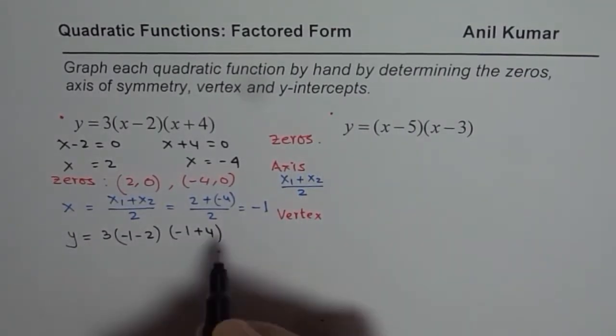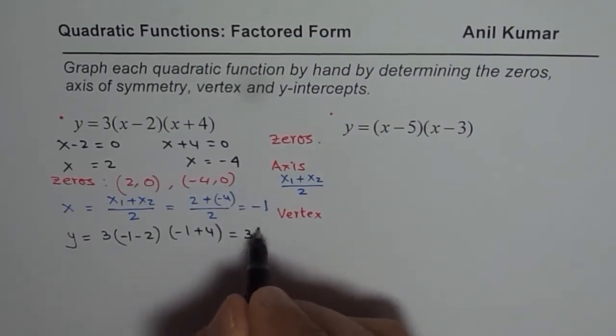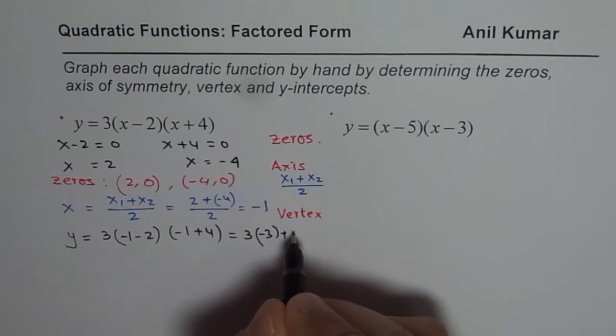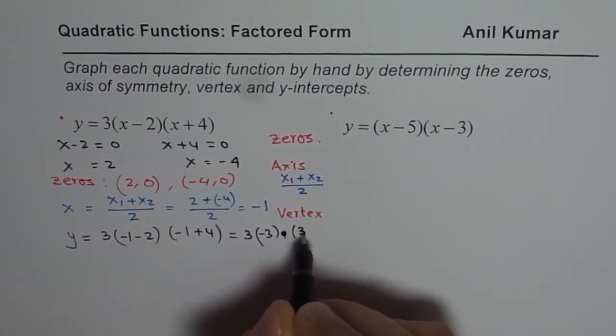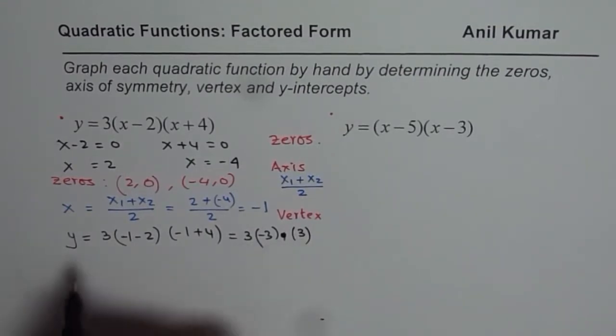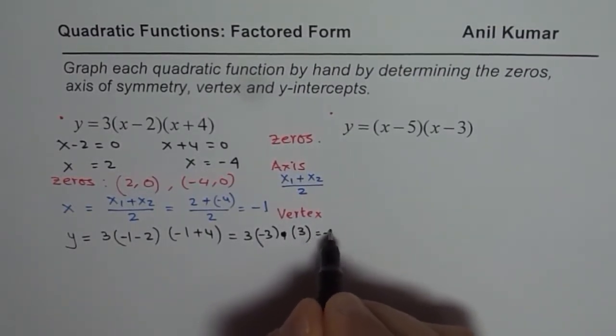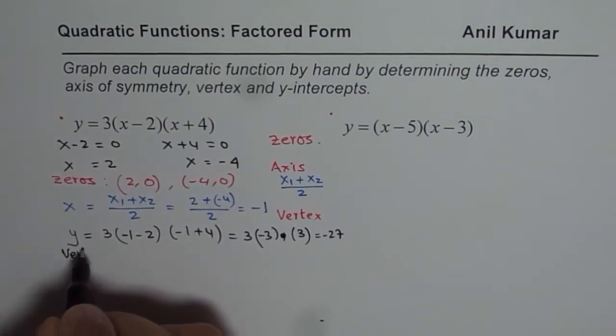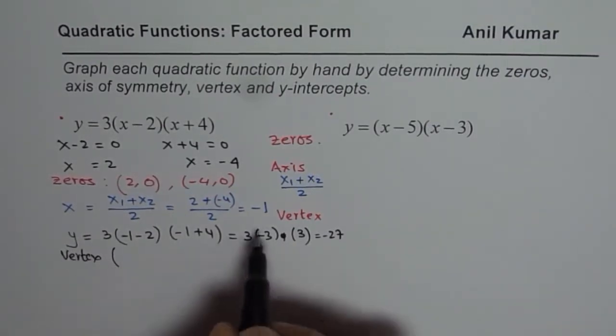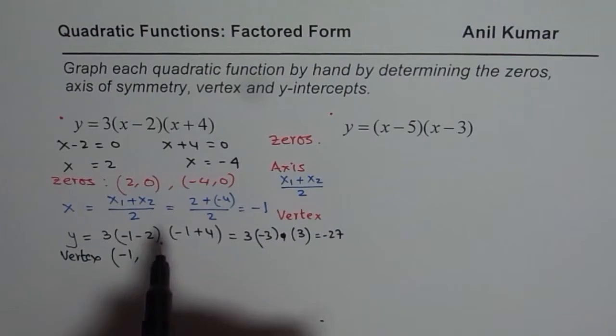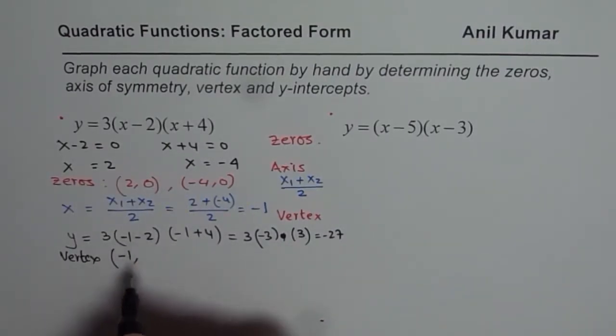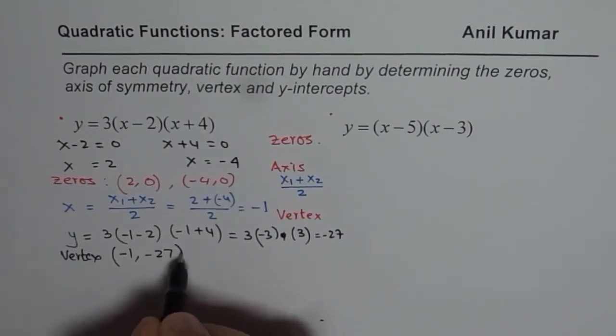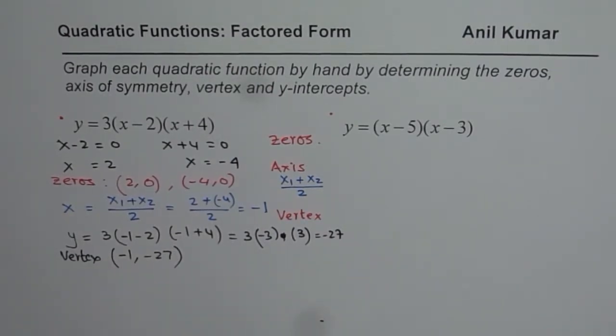That gives you 3 times (minus 1 minus 2) times (minus 1 plus 4). Minus 1 minus 2 is minus 3, and minus 1 plus 4 is 3. So 3 times minus 3 times 3 is minus 27. So the y value is minus 27. We get the vertex at (-1, -27).